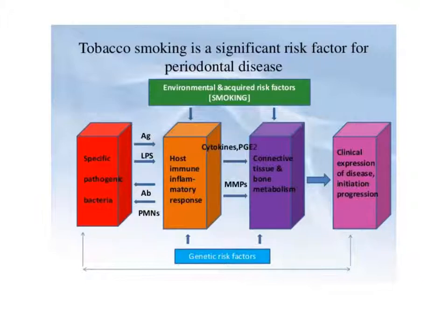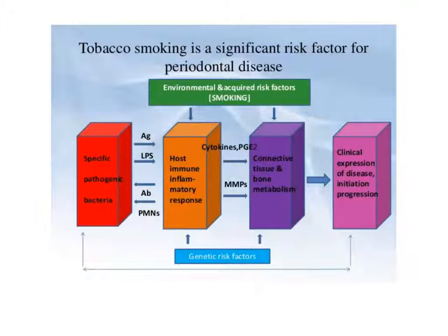This diagram shows the effect of smoking and other factors on periodontal diseases. When a specific pathogen like bacteria enters the body, it acts as an antigen and the body responds by forming antibodies and sending polymorphonuclear cells as a first-line defense. The host immune inflammatory response is initiated and it will secrete cytokines which initiate prostaglandin E2 and matrix metalloproteinase. These two are responsible for connective tissue and bone metabolism, leading to clinical expression of disease and progression.